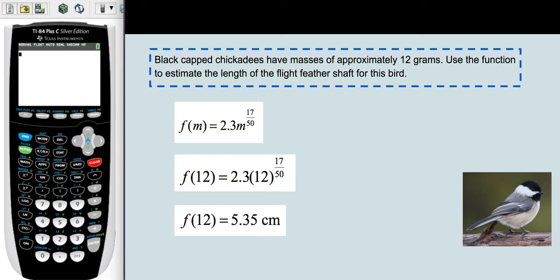That means that f(12)—went too fast—that means that f(12) = 2.3(12)^(17/50). If we do a bit of evaluation, we'll find out that f(12) = 5.35, and that'll be measured in centimeters. But let's go do that on the calculator.